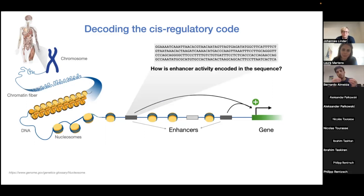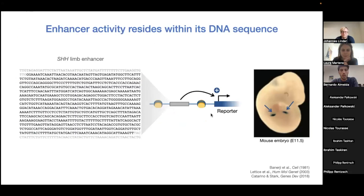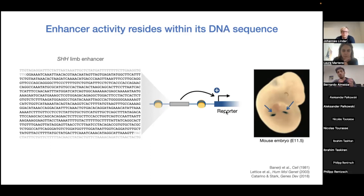Understanding how enhancer activity is encoded in the sequence remains a big challenge and the main interest of my PhD studies. An important characteristic of enhancers is their ability to activate transcription outside the endogenous genomic context. For example, the limb enhancer of the sonic hedgehog gene, when isolated into a reporter assay, can drive transcription of the reporter specifically in the limbs, showing that all necessary information is contained in the DNA sequence.